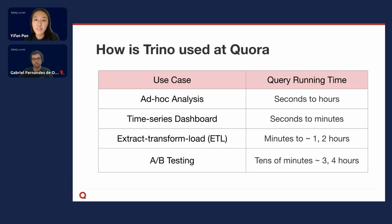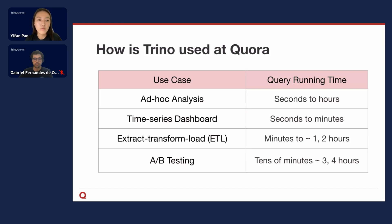Thirdly, we have ETL batch jobs. These jobs run on a regular basis, could be daily or hourly, and those queries typically take a few minutes to one to two hours to complete. And finally, we've got our A/B testing data pipeline on Trino. This is the heaviest Trino use case we have, and the queries will take anywhere from tens of minutes to around three to four hours.